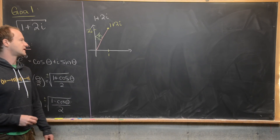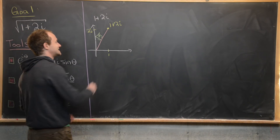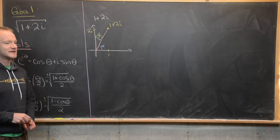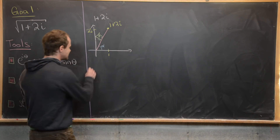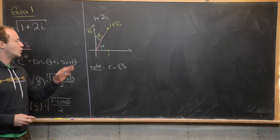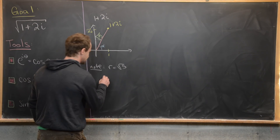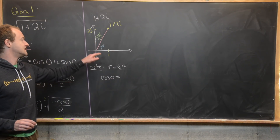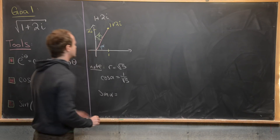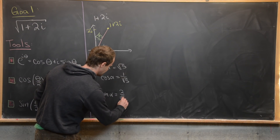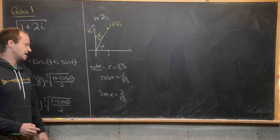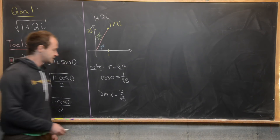The distance is the square root of 1 plus 2 squared, which is the square root of five. The angle I'll call alpha. It's actually tricky to find the exact value of alpha and also not necessary. In our setup we have r equals the square root of five. We don't know alpha, but we do know cosine of alpha and sine of alpha. Cosine of alpha is adjacent over hypotenuse, which is 1 over root five. Sine of alpha is opposite over hypotenuse, which is 2 over root five. We don't need the exact value of alpha — only the values of its cosine and sine.